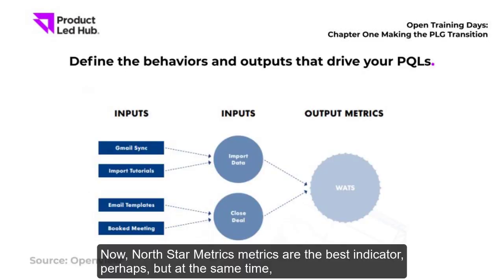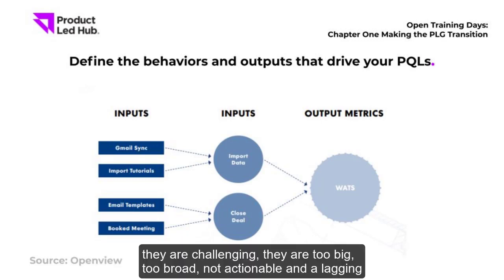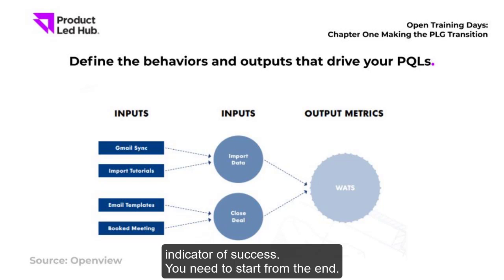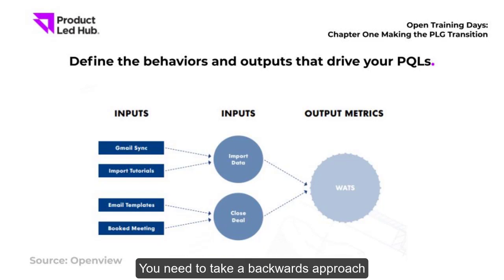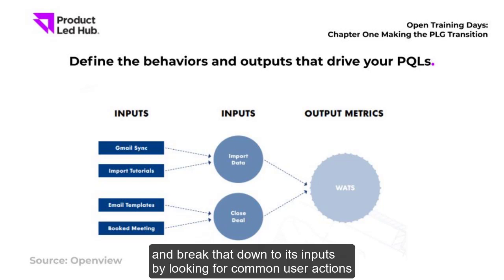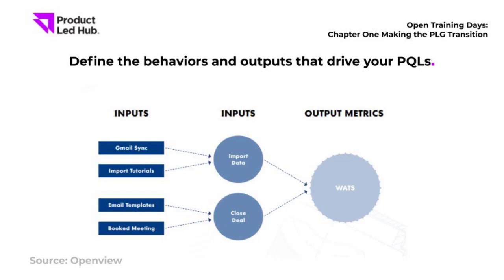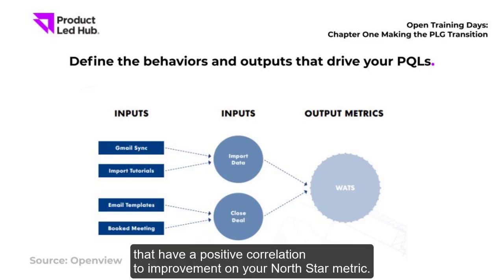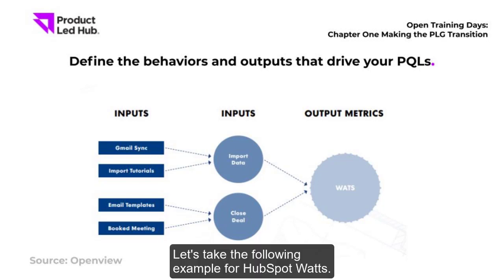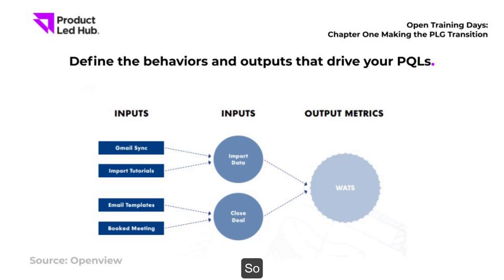North star metrics are the best indicator, but they are also challenging — too big, too broad, not actionable, and a lagging indicator of success. You need to take a backwards approach and break that metric down to its inputs by looking for common user actions that have a positive correlation to improvement on your north star metric.